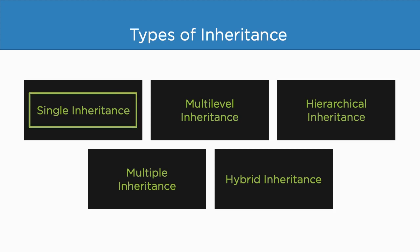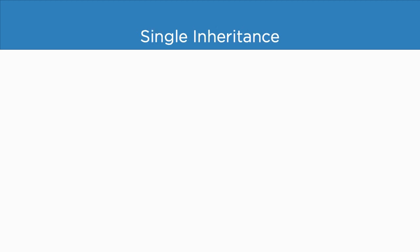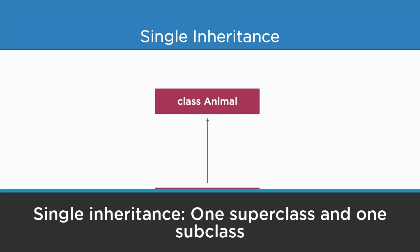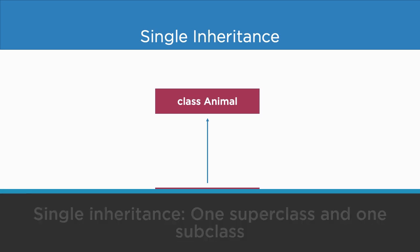Let us start with single inheritance. Suppose we already have a class animal being used in our program, and there is a need for another class dog. In class dog, we can reuse the code written in class animal, so here we can apply inheritance. An inheritance where we have only one superclass and one subclass is known as single inheritance.